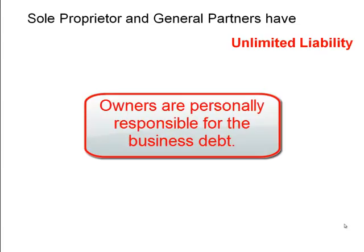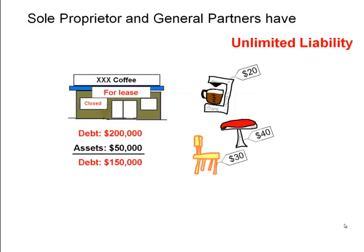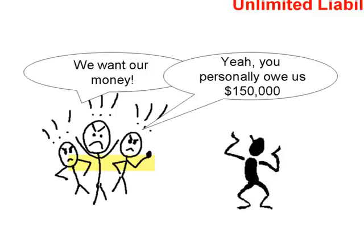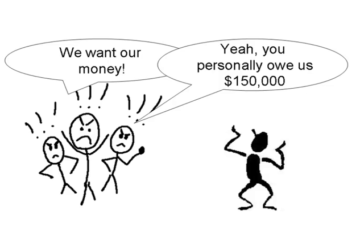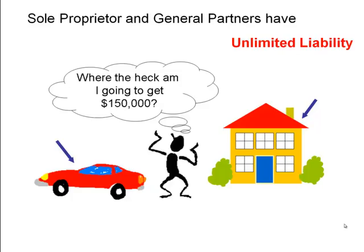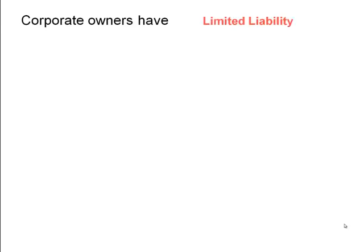Shareholders of a corporation have limited liability. Sole proprietors and general partners, in contrast, have unlimited liability. For example, suppose you had a coffee shop and it failed. The coffee shop had a debt of $200,000; you sold all the assets for $50,000, leaving creditors still owed $150,000. With unlimited liability, creditors can claim you personally owe that money, and your personal property is at risk.